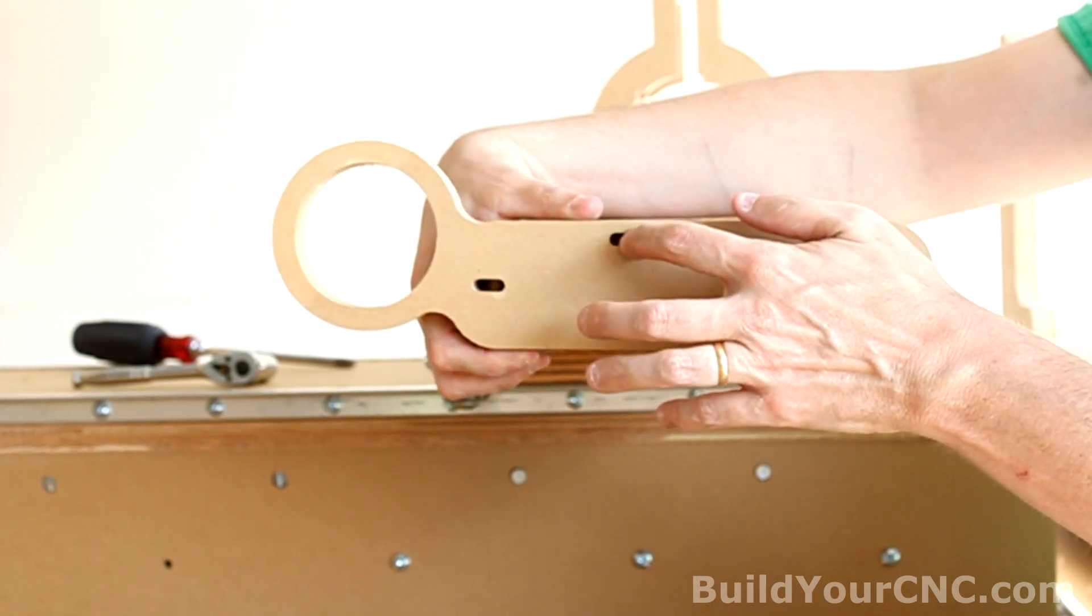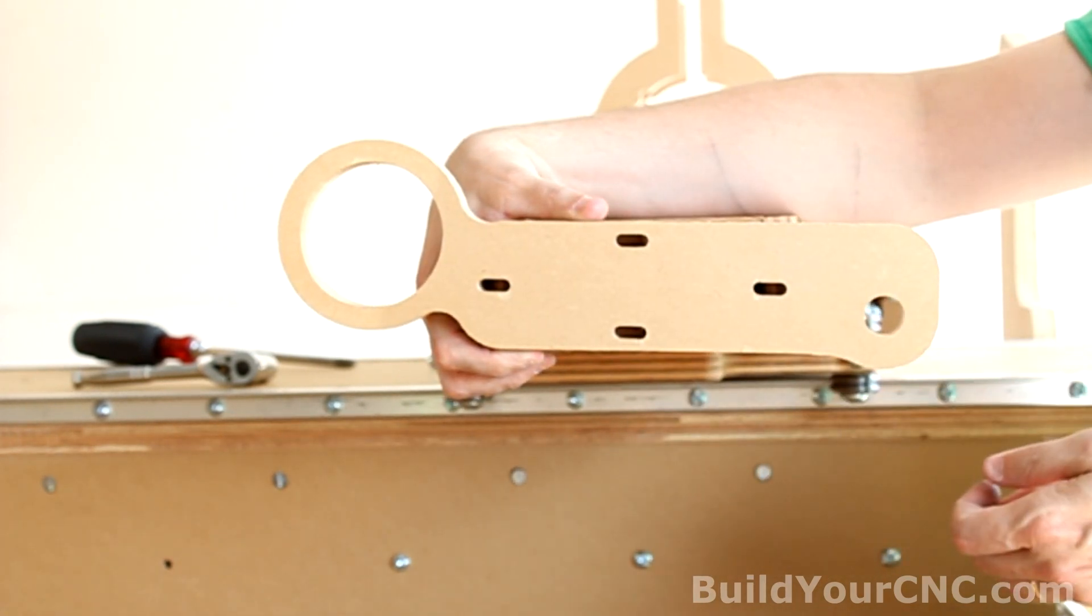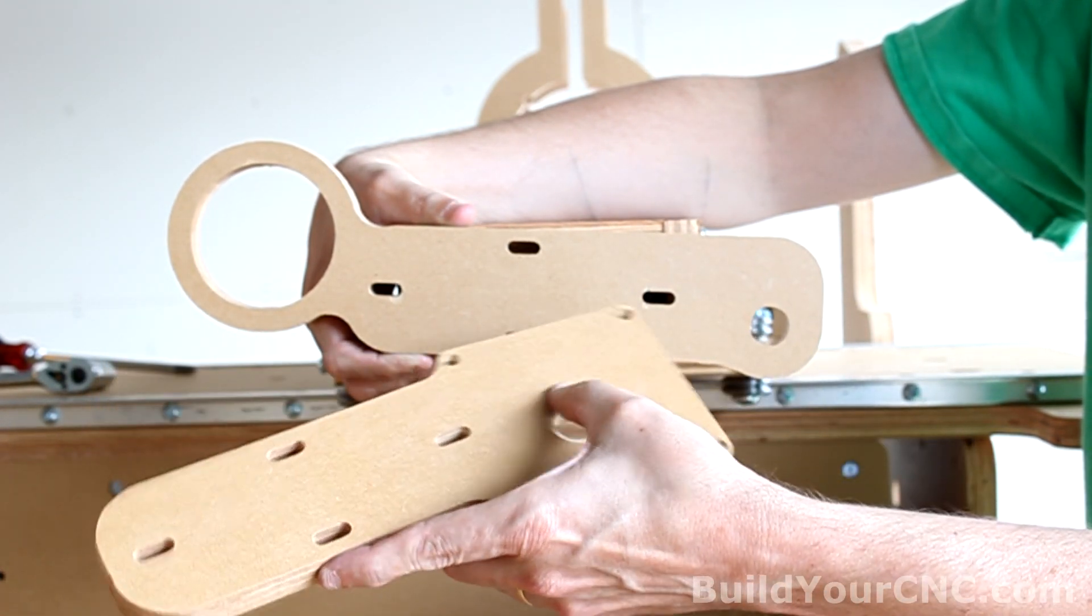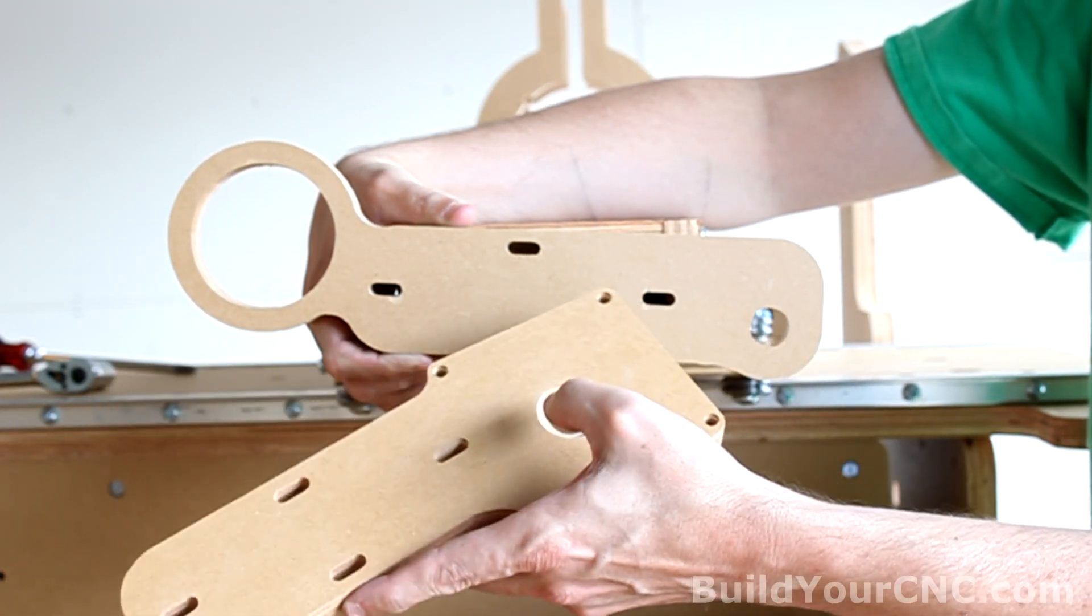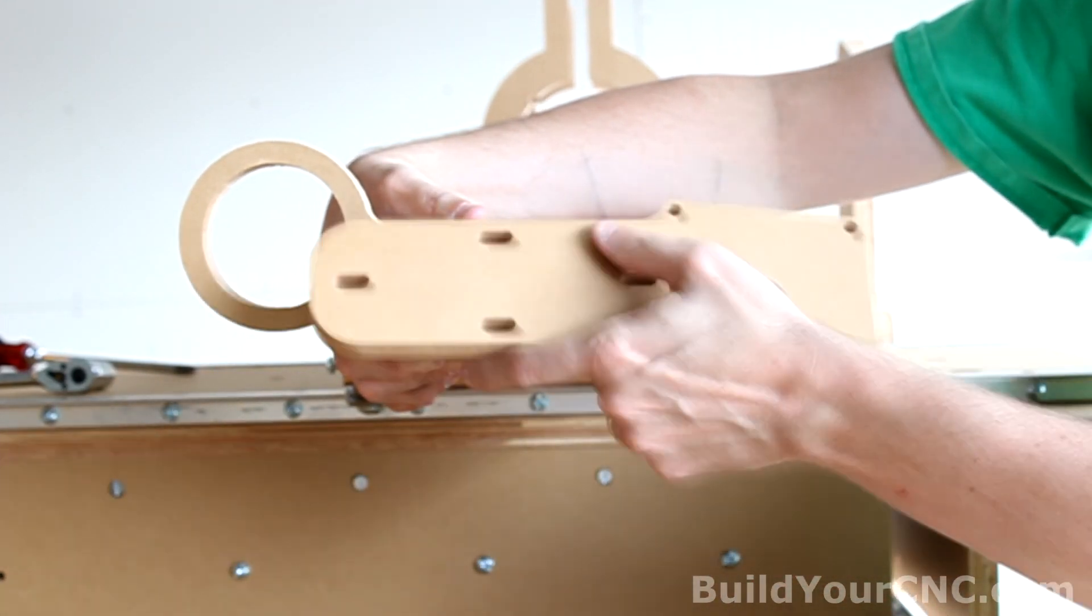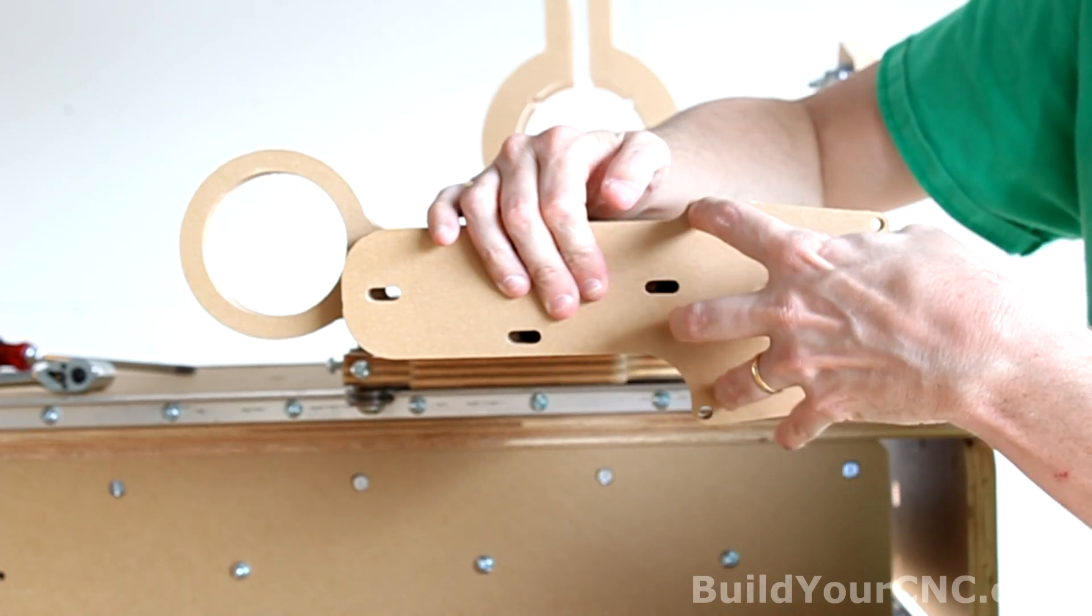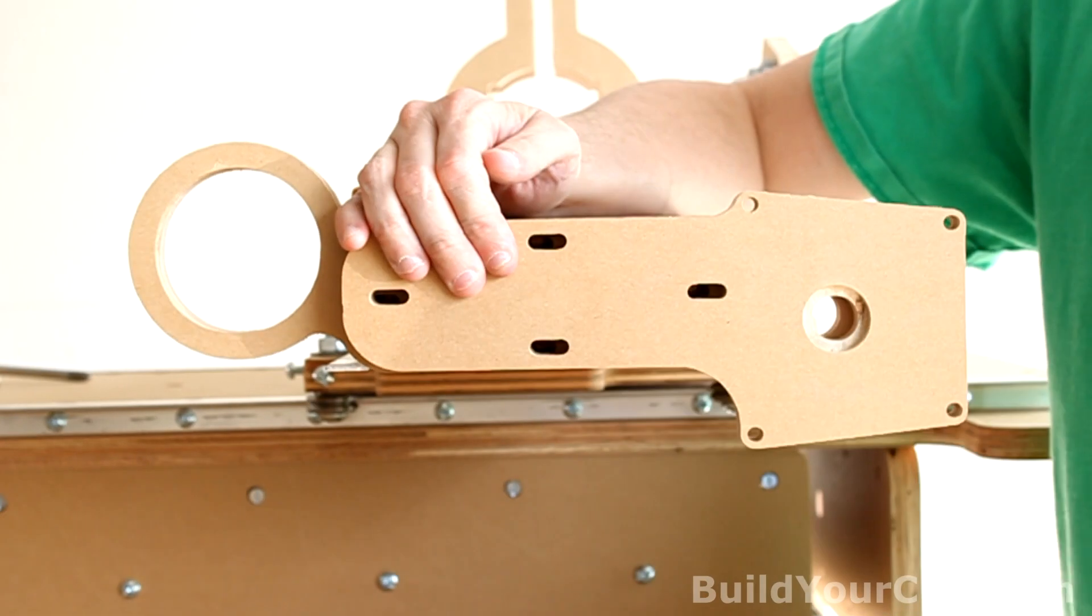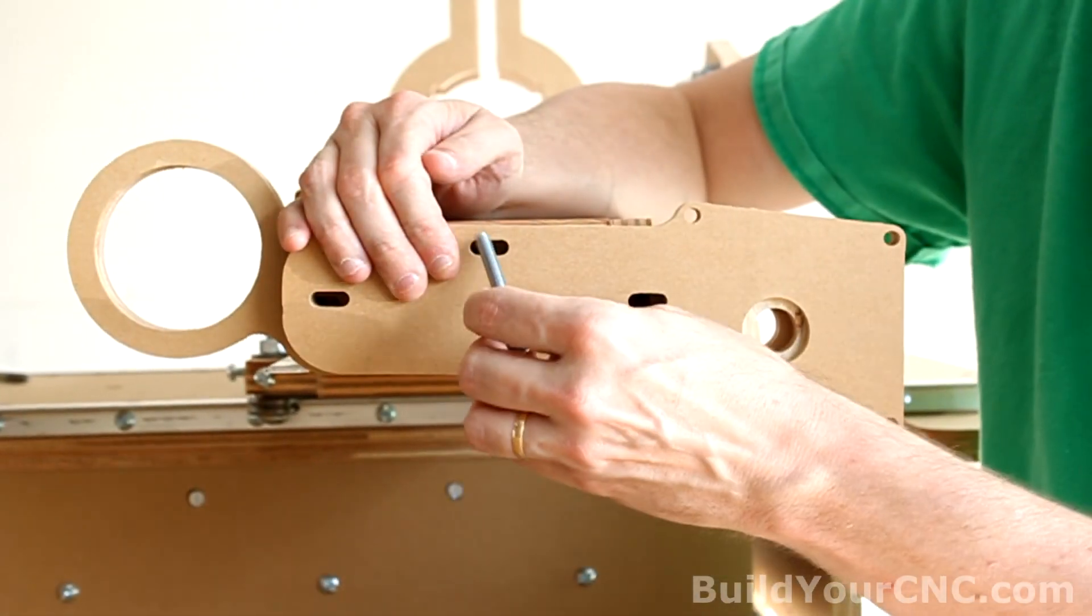You're going to use 1.5-inch screws and cross-dowels for this. We'll also need this piece, which is another bearing mount for the Z-axis. You'll have to have two bearings, one on the top and one on the bottom, which is on the other side of this. And the motor mount piece will also mount these four holes. We'll use 2.5-inch screws and cross-dowels for this.